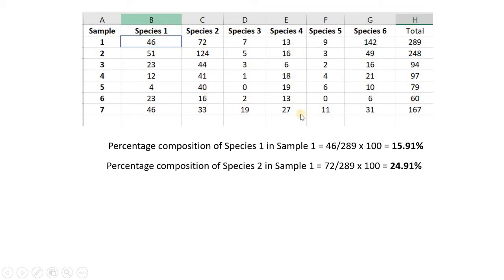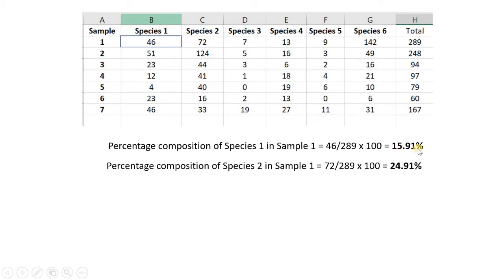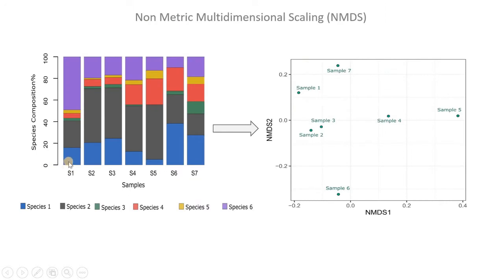I have converted all count values into percentage composition for creating this chart. In sample 1 we get 15.91% for species 1, represented in blue. Species 2 is in black or gray, and all six species are represented in different colors so you can see their composition.